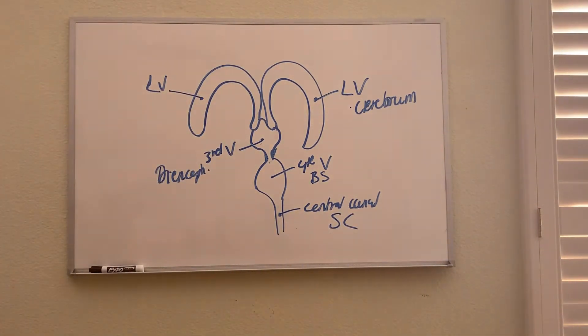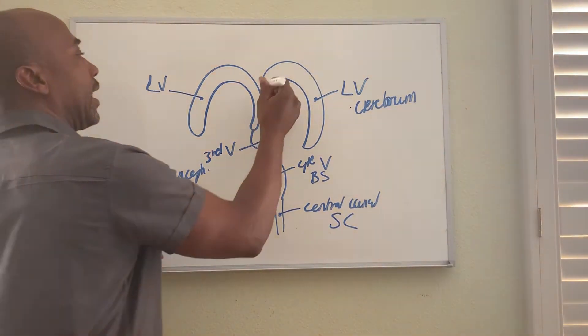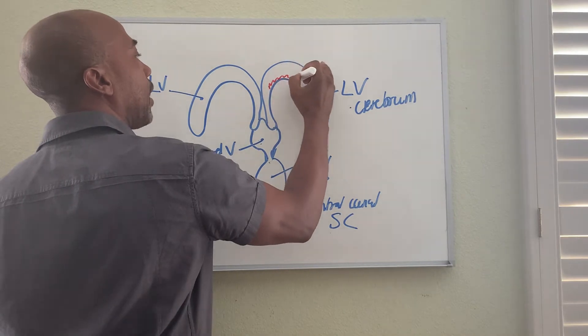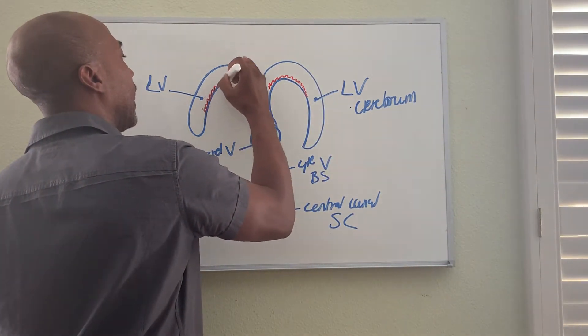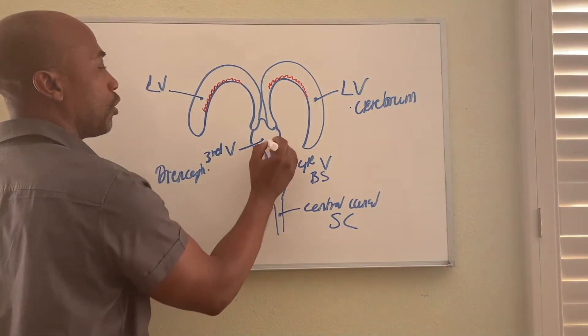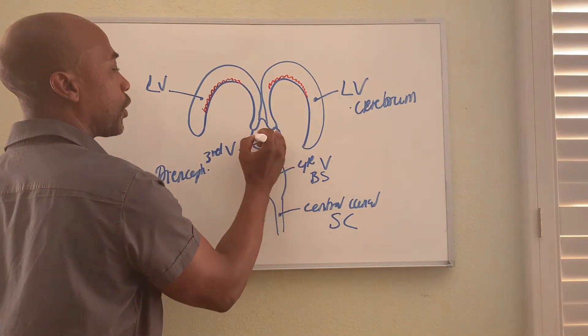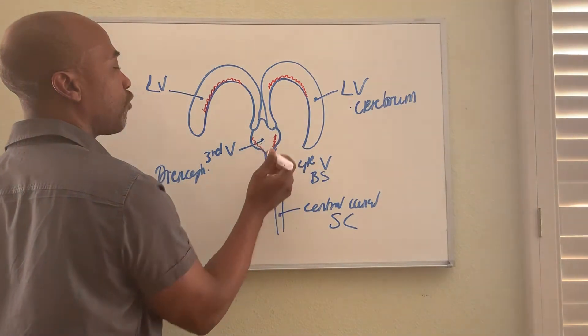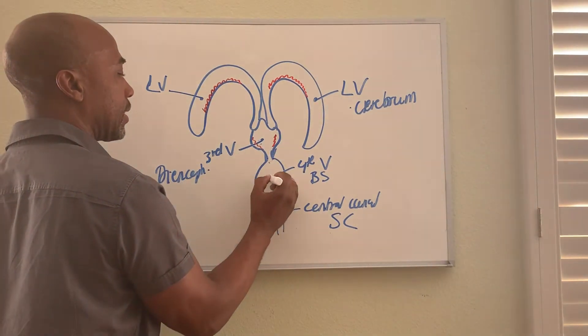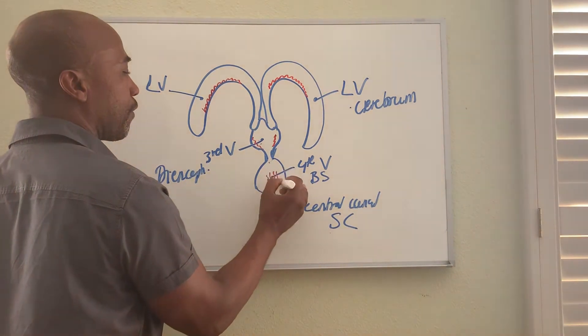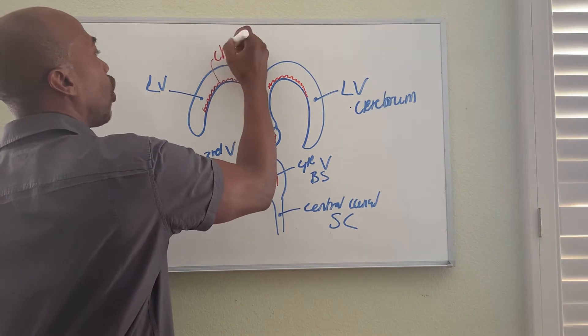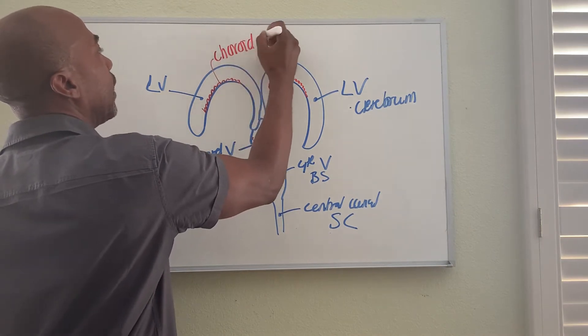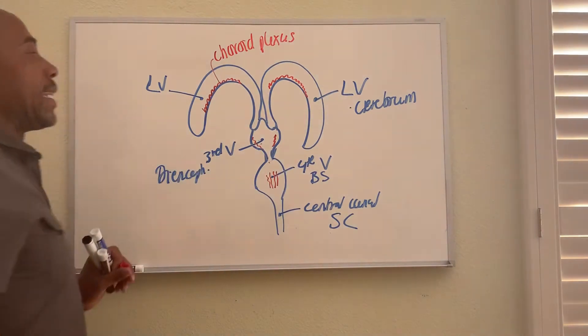Now in each of these ventricles you have a capillary system, capillaries which are blood vessels. These blood vessel capillaries can filter blood to form a fluid.